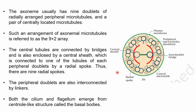Both the cilium and flagellum emerge from a centriole-like structure called the basal bodies. In summary, the structure of cilia consists of a 9+2 array arrangement with nine doublets of peripheral microtubules, one doublet at the center enclosed in a central sheath connected to peripheral microtubules through radial spokes, and peripheral microtubules interconnected through linkers and inter-tubule bridges.